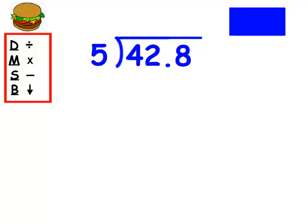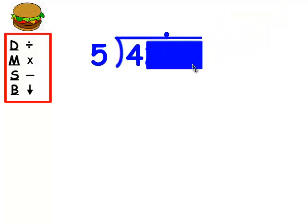The first thing I do with this problem is check to see if there's a decimal point in my divisor — and there isn't. Then I look at my dividend. There's a decimal point here, and that's totally okay, so I'm going to float it straight up. I'll use my strategy of covering up all the numbers except the ones I'm working with. How many groups of five can I get out of four? Zero — five is bigger than four.